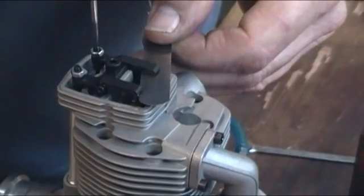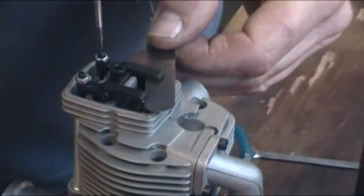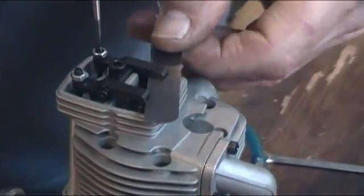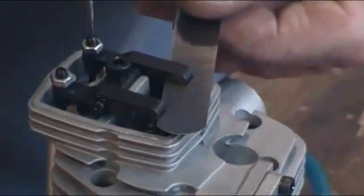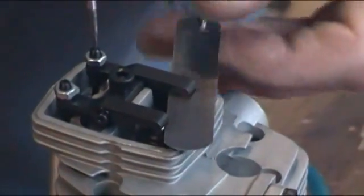So we want to have the feeler gauge so that it will slide in but with a certain amount of traction whilst it is under there.